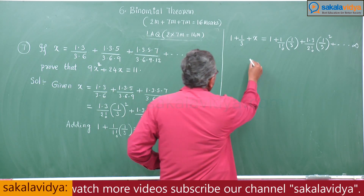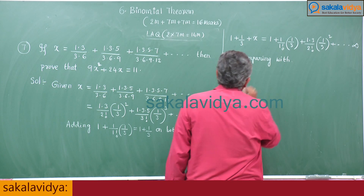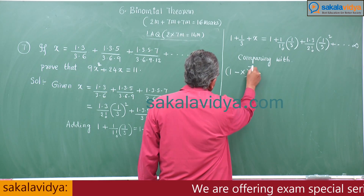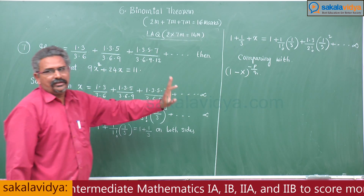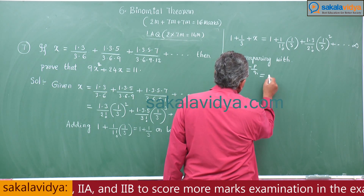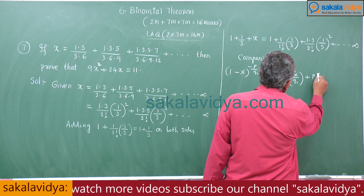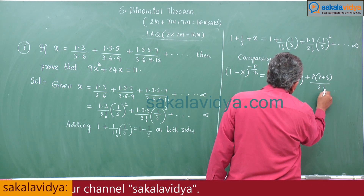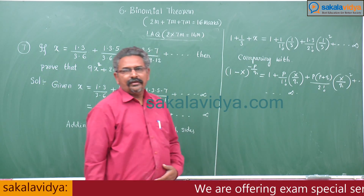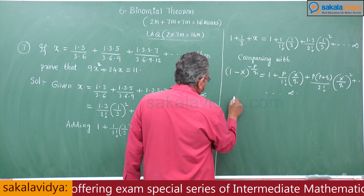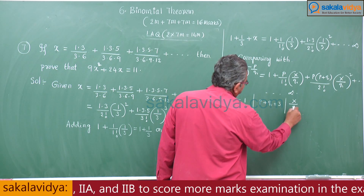Comparing with (1 − X)^(−p/q) = 1 + (p/1!) · (X/q) + p(p+q)/(2!) · (X/q)² + … Just compare these two: p = 1, p + q = 3, X/q = 1/3.